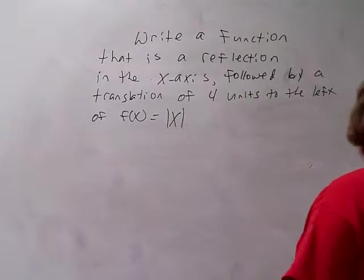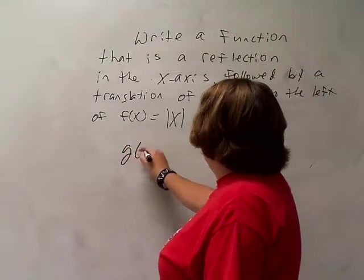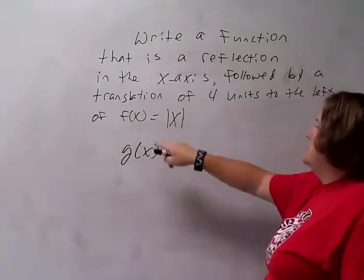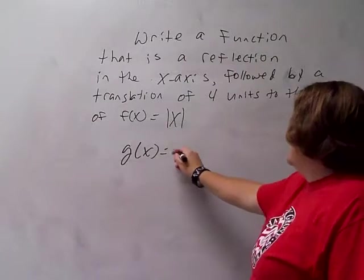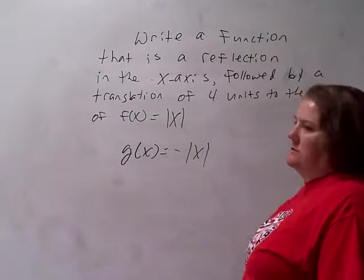I'm going to name my new function g. g(x) equals... A reflection in the x-axis just puts a negative out in front, so it's going to be negative absolute value of x. That's my first move.